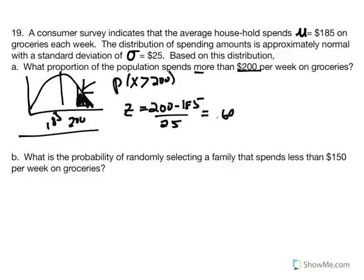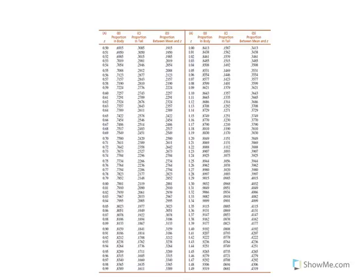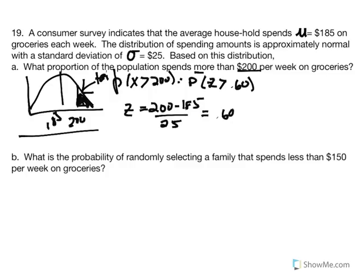The score of $200 represents the tail of the distribution. Rewriting as the probability of Z greater than 0.60, we enter the unit normal table at Z equal to 0.60 and report the tail area: the proportion in the tail is 0.2743. So there is a 27.43% chance of randomly selecting a household that spends more than $200 per week on groceries.